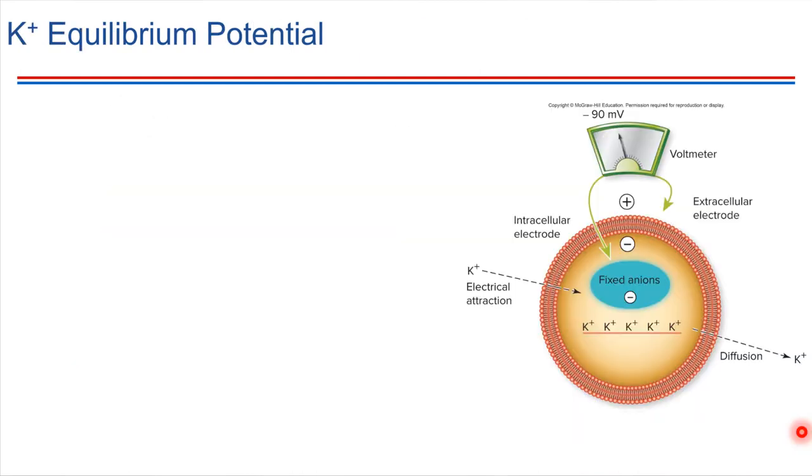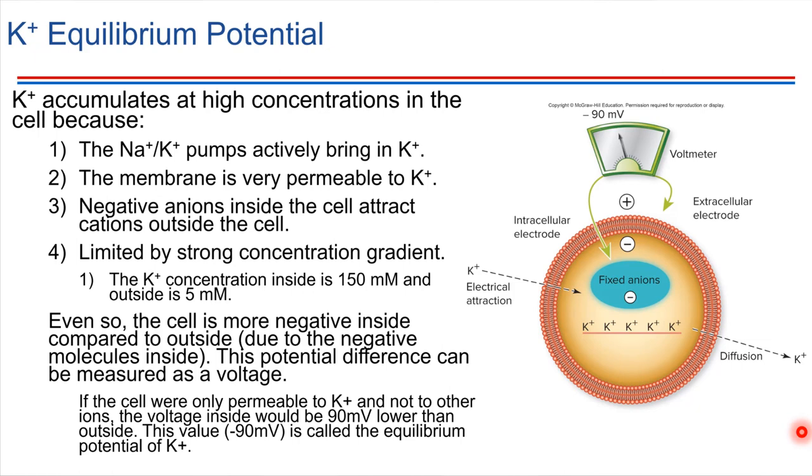So we are going to focus in on potassium for just a minute. Potassium is really key for establishing this potential difference that cells have. And remember that with potassium, it tends to accumulate inside of the cell. And that's because those sodium-potassium pumps are doing just that. They're actively moving sodium out of the cell and potassium ions into the cell. So potassium is being brought inside of the cell.